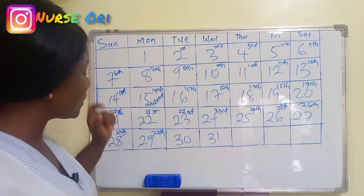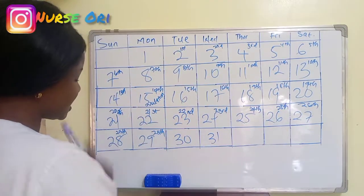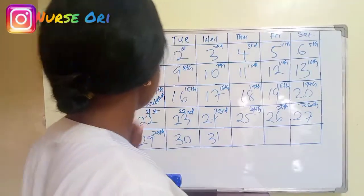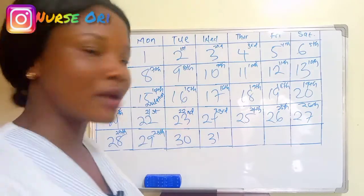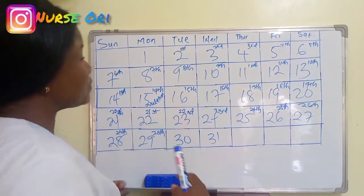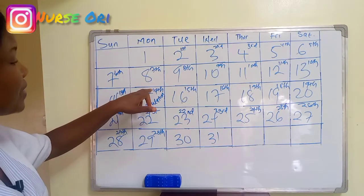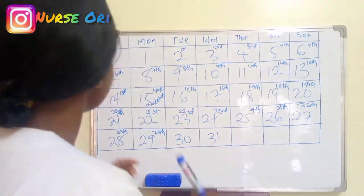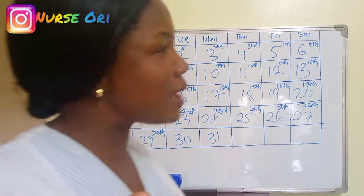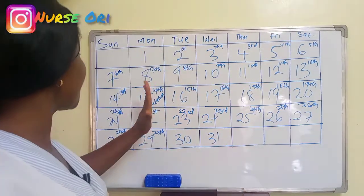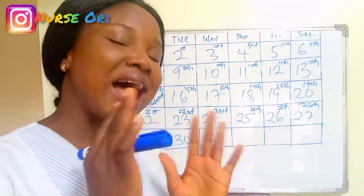And then we have the 15th, 16th, 17th, 18th, 19th, 20th, 21st, 22nd, 23rd, 25th, 26th, 27th, and 28th. So if my menses started on the second of this month, my next menses is supposed to start on the 29th of this month, which is the 28th day of my cycle. Now, we need to understand that sperm when released can live up to five days in the woman's body. So five days before ovulation and five days after the 14th are my fertile days.